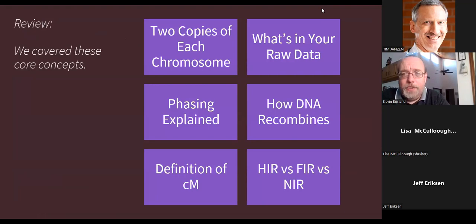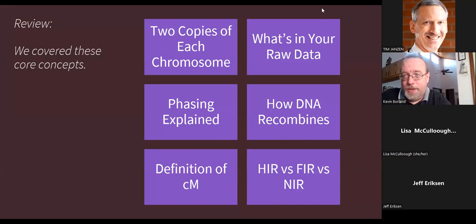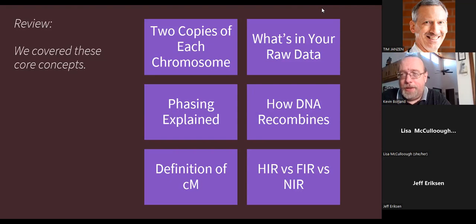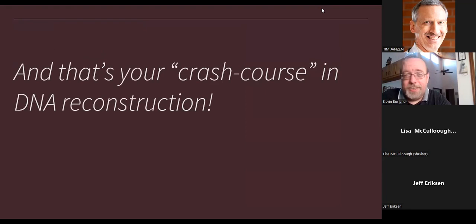Quick review of the six core concepts: two copies of each chromosome, one paternal and one maternal; raw DNA files contain a long list of positional data with two random-ordered allele measurements per line; phasing unweaves them into one paternal and one maternal column; phasing can be done by comparing to a parent's DNA; DNA recombines pretty randomly; a chromosome of 250 centimorgans would average about 2.5 recombination events; and HIR, FIR, NIR are terms for matching on one side, both sides, or neither side.